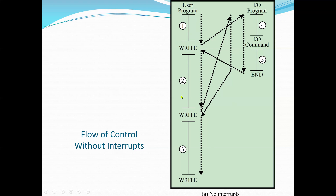The time the processor would be waiting for I/O to finish — this is where using interrupts can allow it to do some useful work instead. A final sequence of instructions completes the operation, which may include setting a flag indicating success or failure. The dashed line represents the path of execution followed by the processor, showing the sequence in which instructions are executed. After the first write instruction is encountered, the user program is interrupted and execution continues with the I/O program.